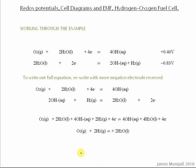So to write out the full equation, I suggest rewriting with the more negative electrode reversed. So that's this one here. So I've written out the more positive one, just exactly the same there. And then I've written this one out with everything on the left, which was on the right, and vice versa. And then that means that I can double up this bottom equation here so that the electrons will cancel.